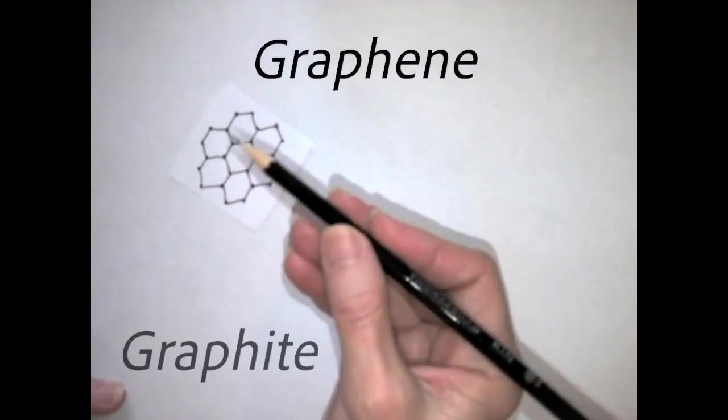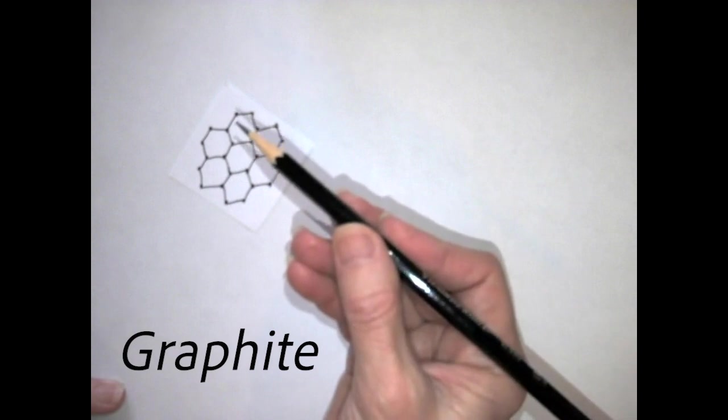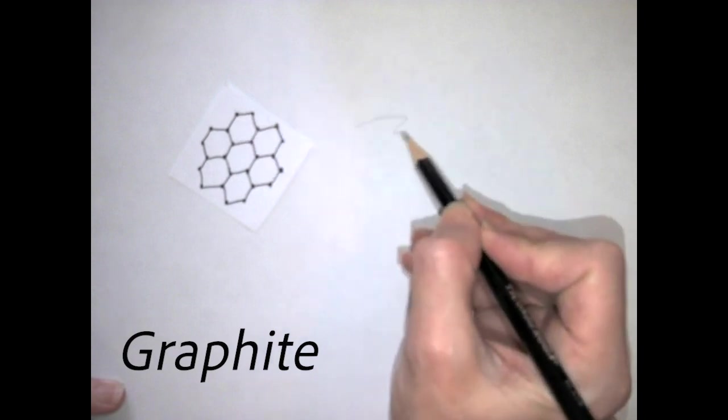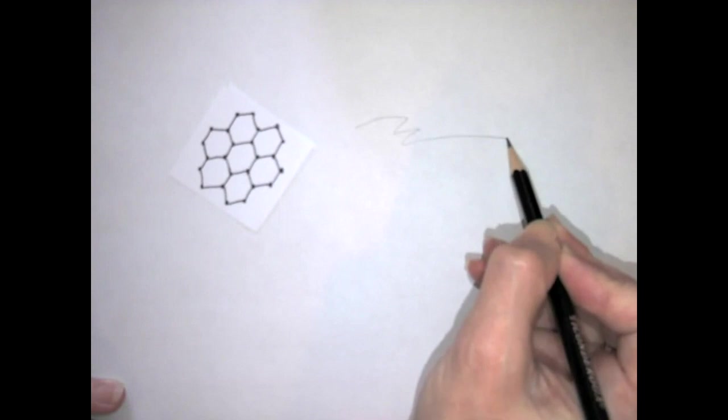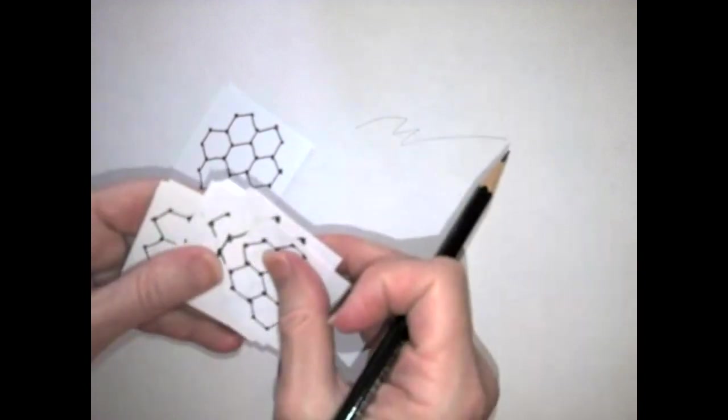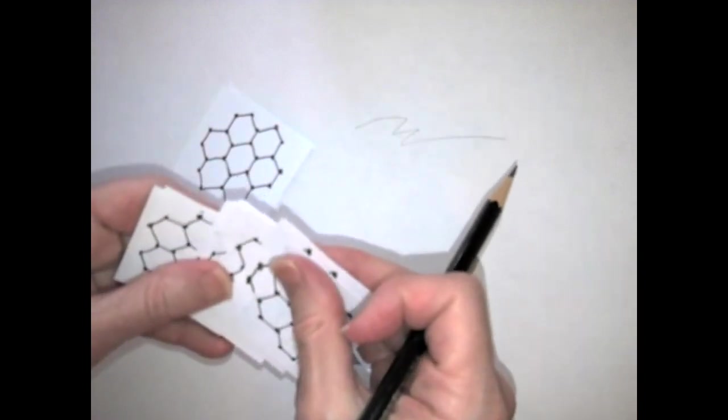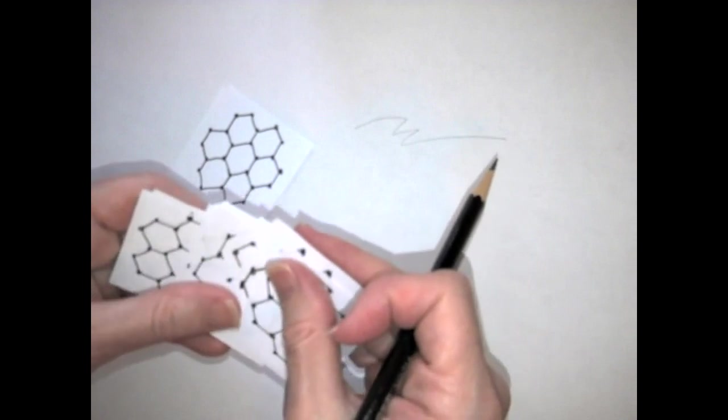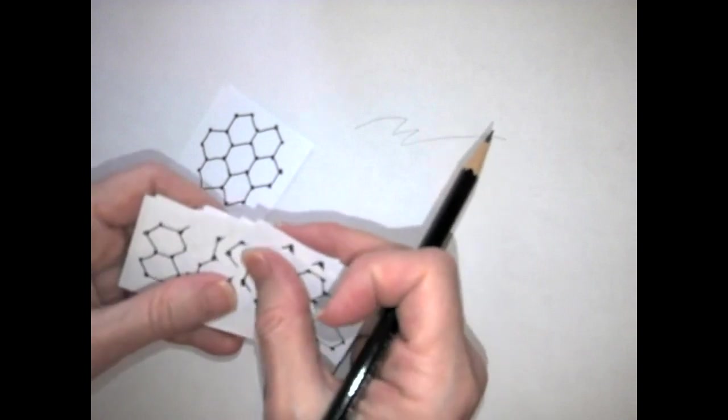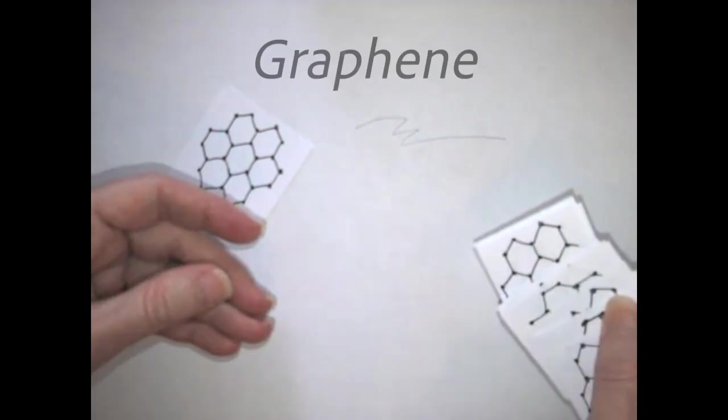Graphene sounds a little bit like graphite, which is what the inside of your pencil is made of. Graphite is a form of pure carbon. It contains many, many hexagonal pattern sheets, all stacked on top of each other. When you write with a pencil on a piece of paper, you're leaving a trail of these graphene sheets on the page.